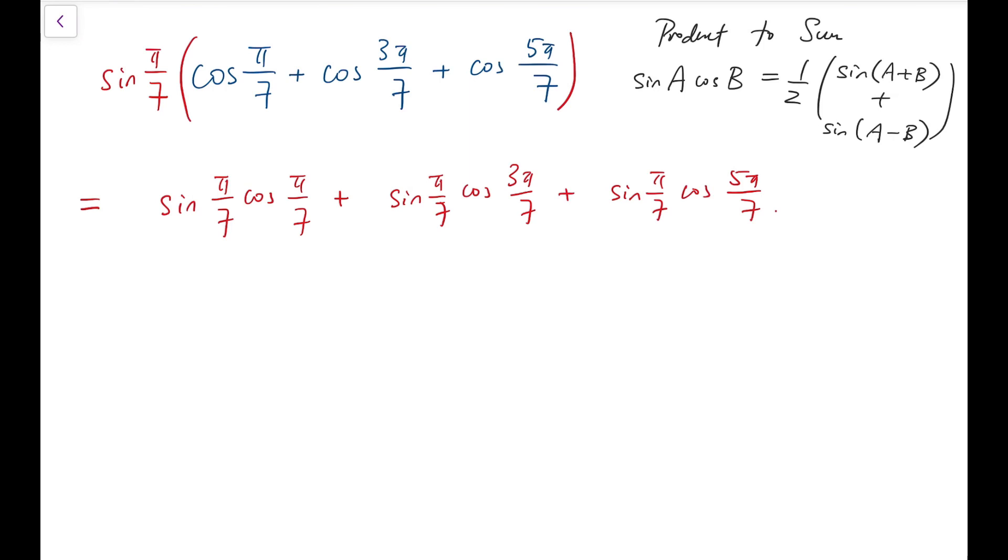So it will become a half of sine of 2π over 7 minus sine of 0. So in fact, for the first term, this can actually also be done by recalling the double angle formula.